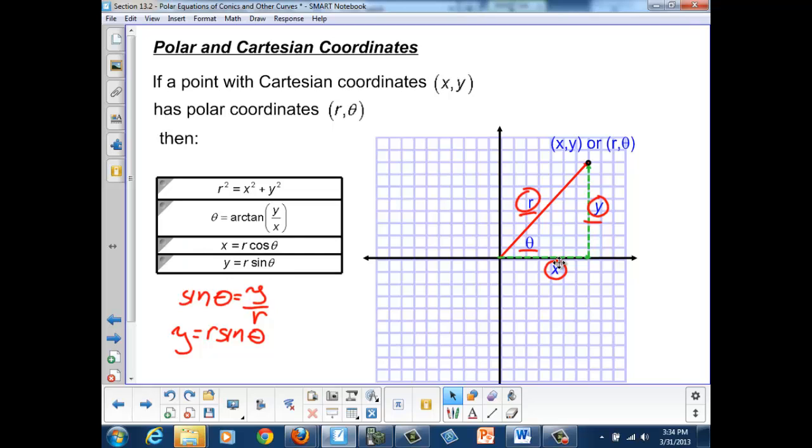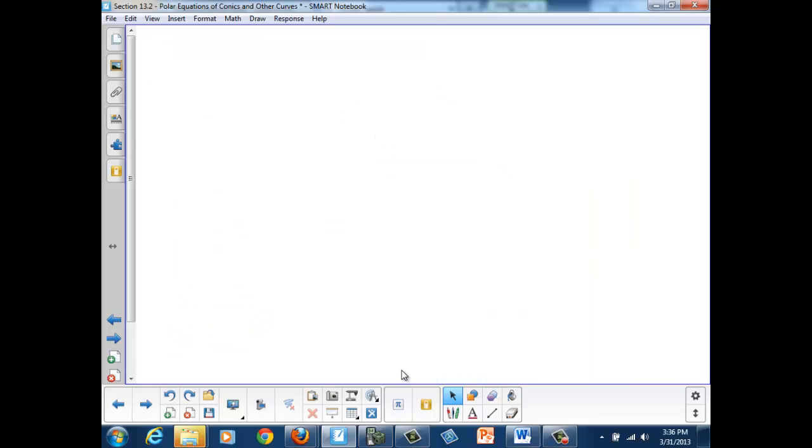And using the same logic for x, x will turn out to be r cosine theta. So let's look at the implications of this new coordinate system.